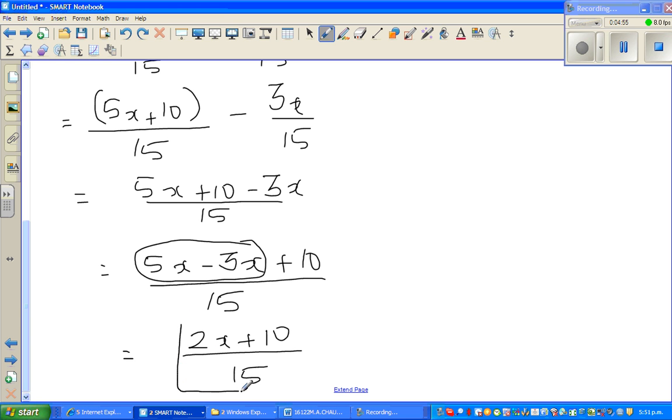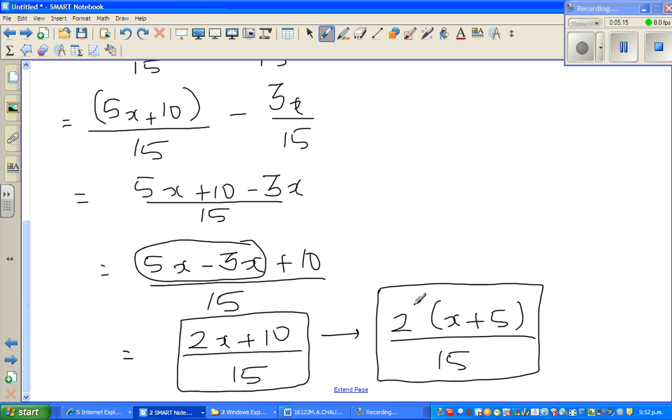Now this is a perfect answer. There is nothing wrong. You can't add 2x and 10 because they are unlike terms. But if you want to factorize this or simplify this a little, you can factor the 2 out. So this is 2(x+5)/15. Now this is the final answer. You can't do anything further after this. If you're thinking of dividing 5 by 15, that's wrong. This is your final answer.